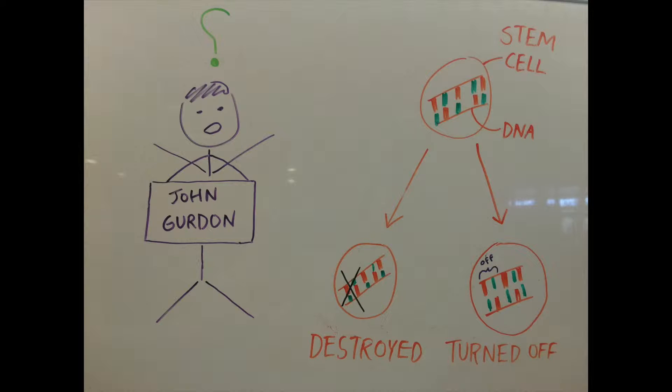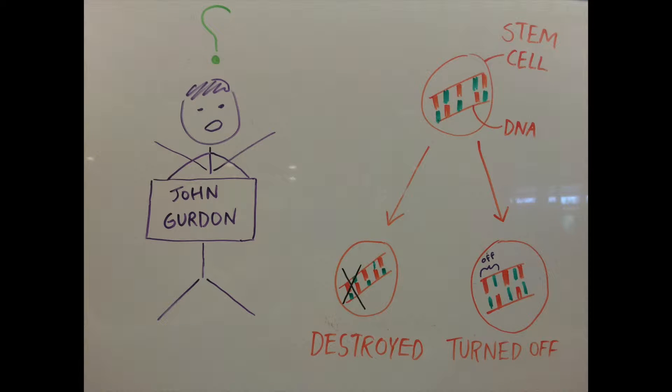Scientists were not sure how these cells became specialized. Some believed unneeded stretches of DNA were destroyed and emitted out of the cell, while others thought that DNA could be turned on and off.